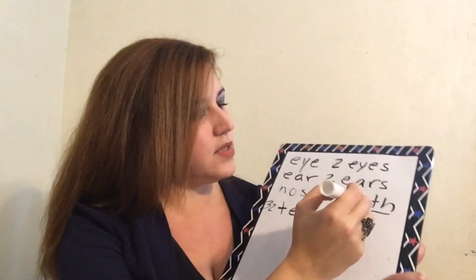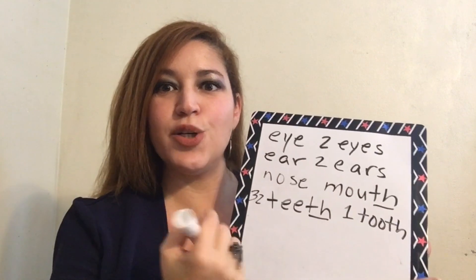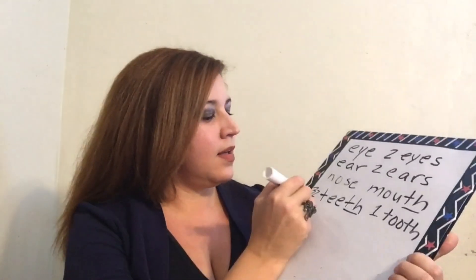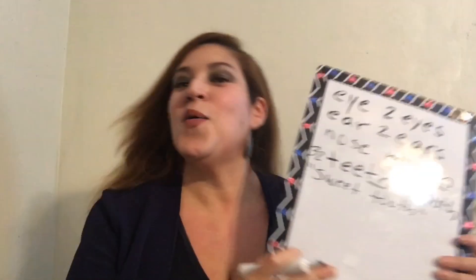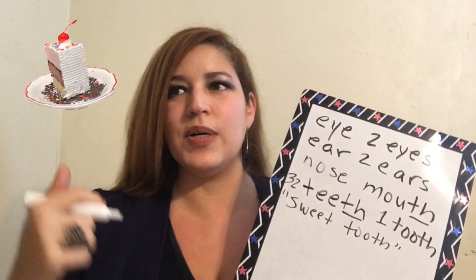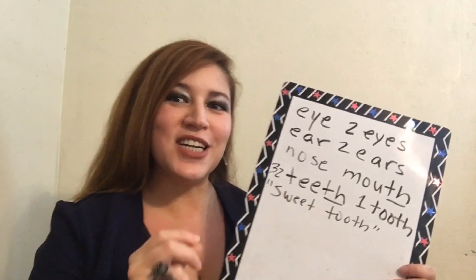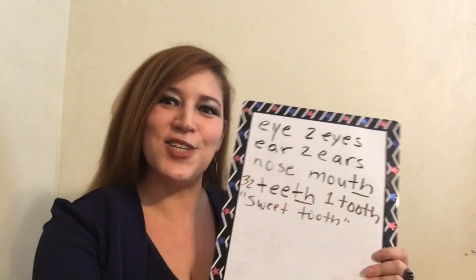But how do we say it if we have only one? Maybe a baby has one. So we say one tooth. We spell it T-O-O-T-H. 32 teeth, one tooth. Okay, students, I'm going to teach you a little idiom, a little expression in English: 'a sweet tooth.' My sister has a sweet tooth. When you have a sweet tooth, you like cake, candy, ice cream, donuts — anything with sugar, anything sweet. The expression is 'sweet tooth,' not 'sweet teeth.' It's just one tooth. So we say sweet tooth.